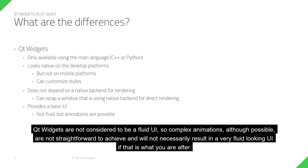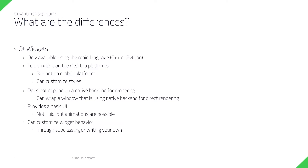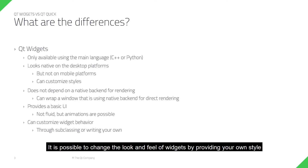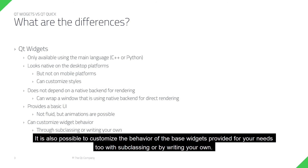Qt Widgets are not considered to be a fluid UI, so complex animations, although possible, are not straightforward to achieve and will not necessarily result in a very fluid-looking UI if that is what you are after. It is possible to change the look and feel of widgets by providing your own style, be it as a custom style using QStyle or a CSS-based stylesheet. It is also possible to customise the behaviour of the base widgets for your needs, with subclassing or by writing your own.